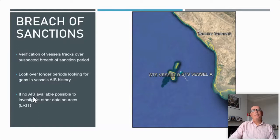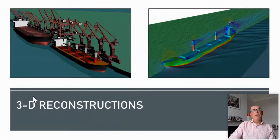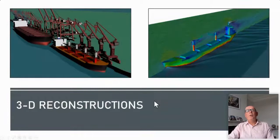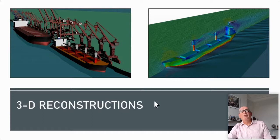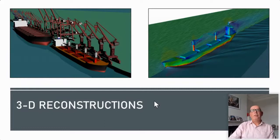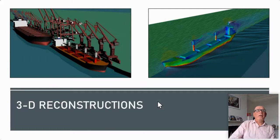We can then take that data and present 3D reconstructions, which are useful, but as Ron pointed out, may or may not benefit the case. The ability now to create 3D reconstructions and to use 3D modelling and point cloud analysis of particular vessels — showing the actual form of a vessel and using that to build up reconstructions — certainly builds an early picture of what happened. But its use in court and arbitration is something which is still being discussed.